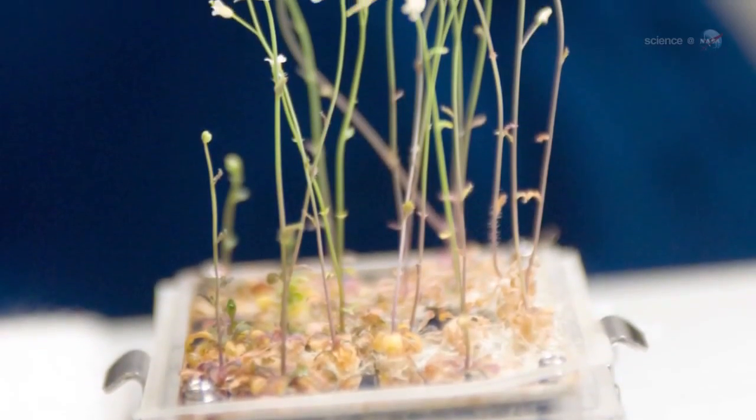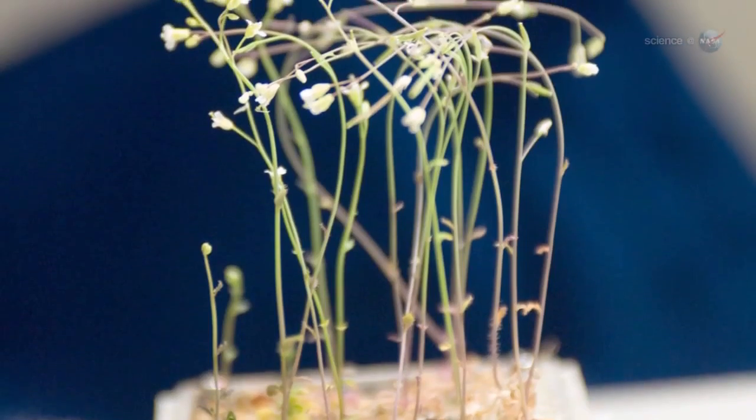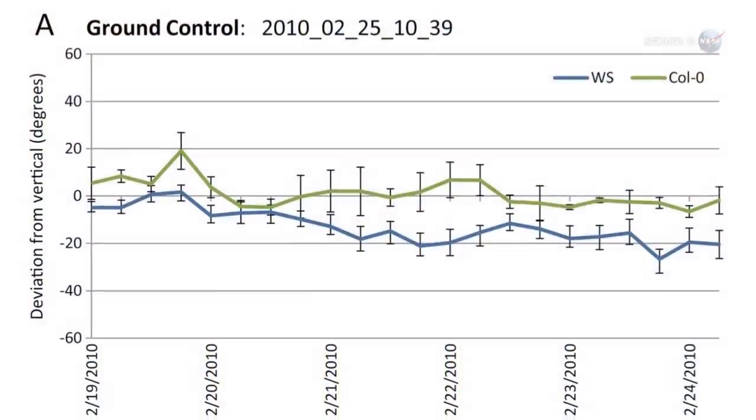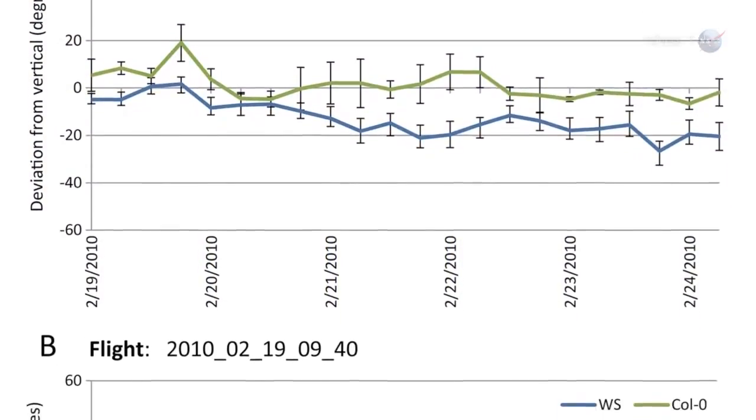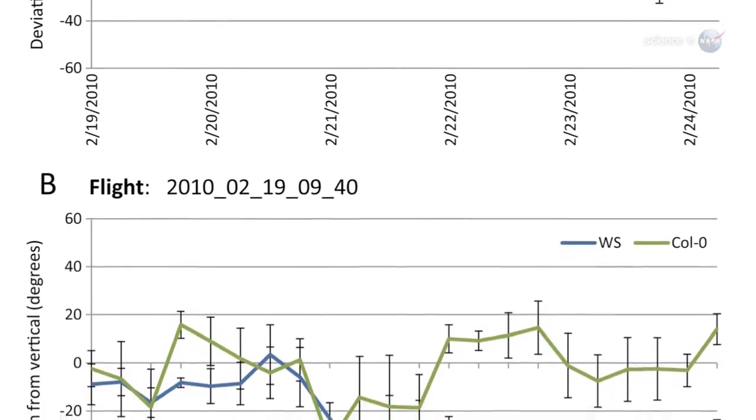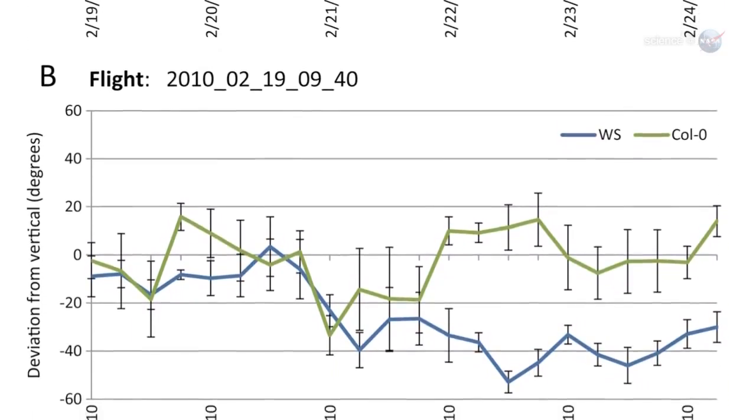Arabidopsis has proven remarkably adaptable to the space environment, notes Furl. The details are not yet fully understood, but thanks to TAGES, data at the cellular and genetic levels are now available for study.